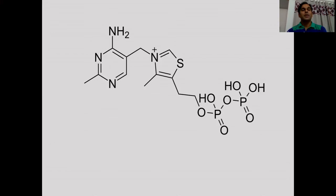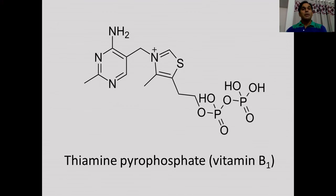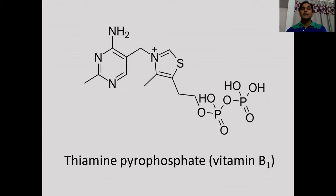Thiamine pyrophosphate is a thiamine derivative, also known as vitamin B1, produced by the enzyme thiamine diphosphokinase. It is synthesized in the cytosol and is required there for the activity of transketolase, and in the mitochondria for the activity of pyruvate, alpha-oxoglutarate, and branched-chain ketoacid dehydrogenase.